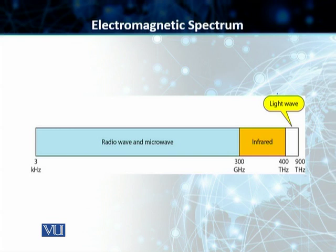We have 3 kilohertz to 300 kilohertz reserved for radio waves and microwaves. Then we have infrared, which is from 300 gigahertz to about 400 terahertz. And then we have light waves between 400 and 900 terahertz, which we don't normally use.